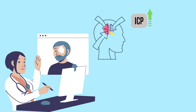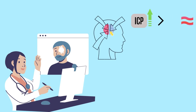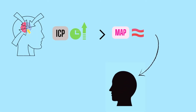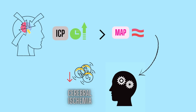The pressure in the brain rises above the mean arterial pressure, which is abnormal because it will restrict perfusion. As the ICP rises, it eventually surpasses the mean arterial pressure, which must be higher than the ICP for brain tissue to receive appropriate oxygenation. Cerebral perfusion pressure — the amount of blood and oxygen delivered to the brain — is reduced, resulting in the brain obtaining insufficient oxygen, also known as brain ischemia.